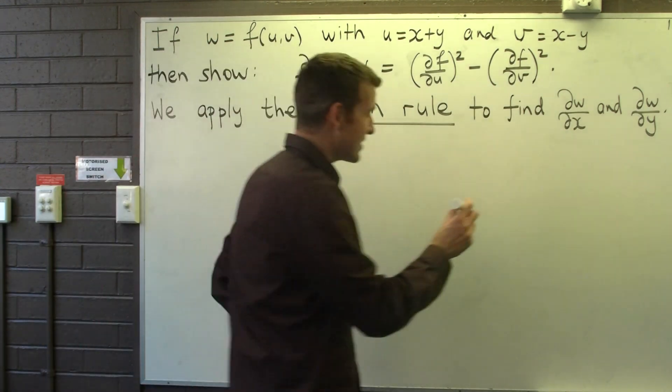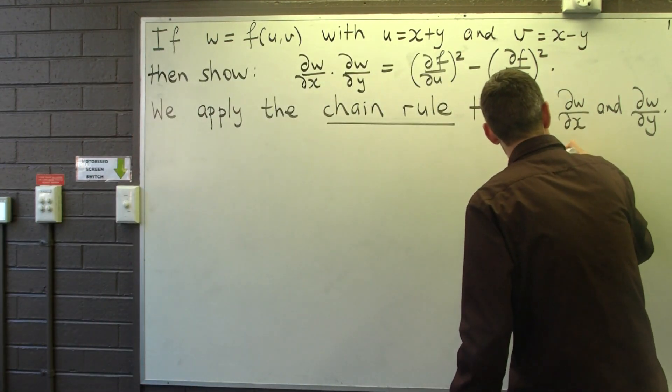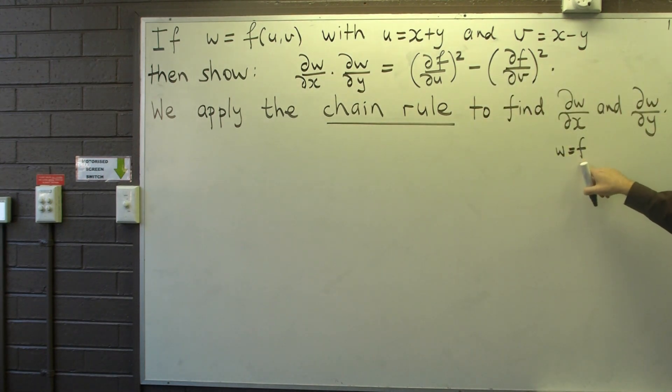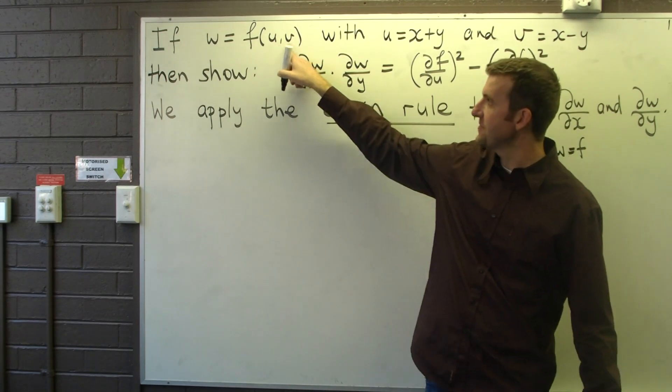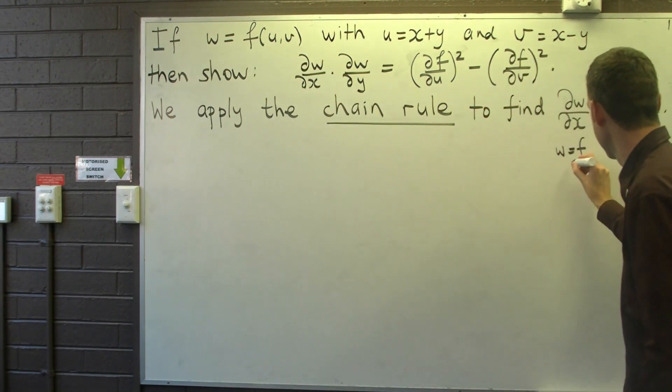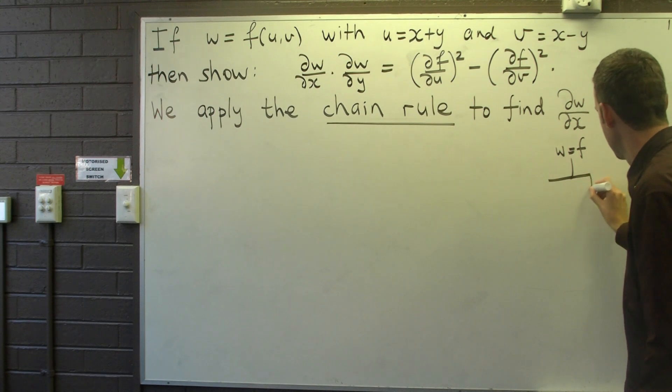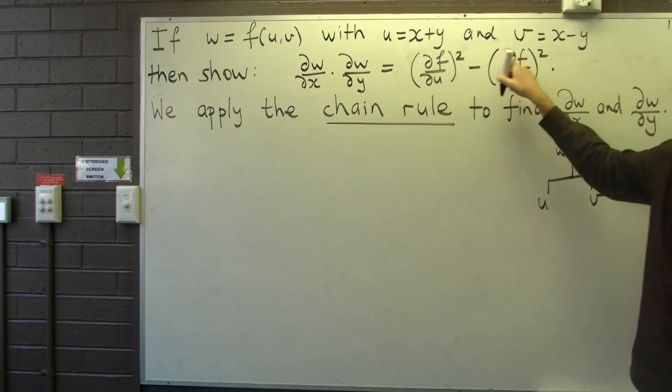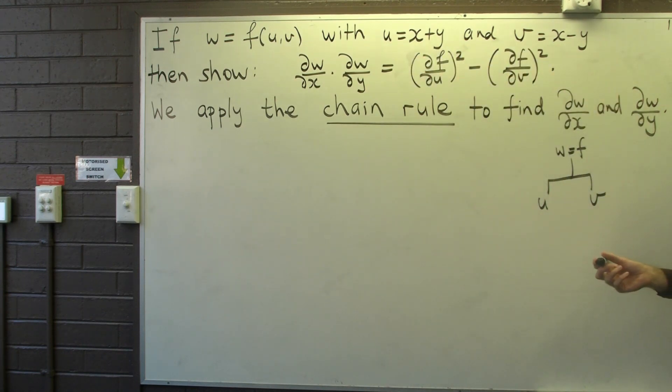You see, we start off with the original case w equals f, and now we know that f depends on u and v. Now both u and v depend on two things themselves, x and y.